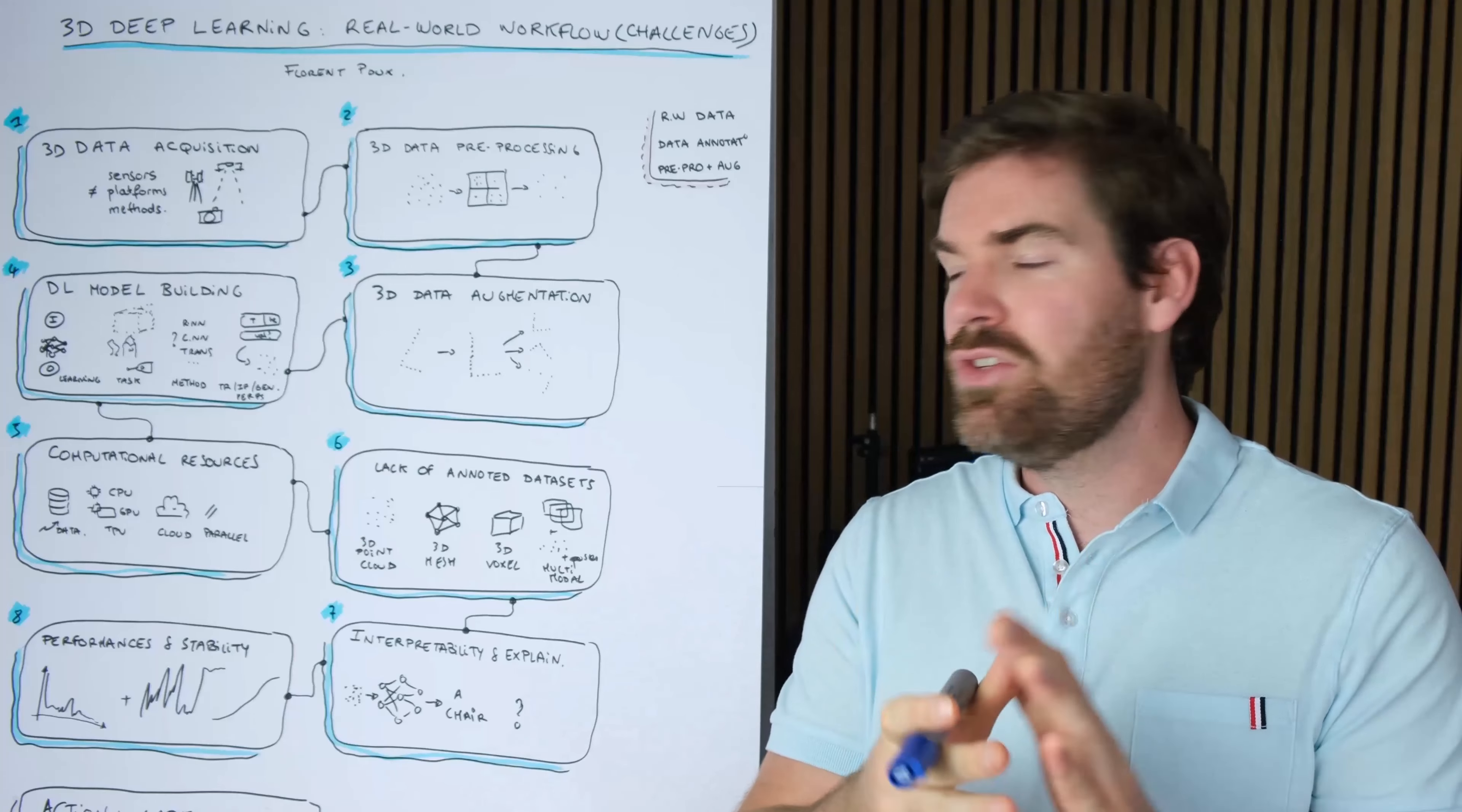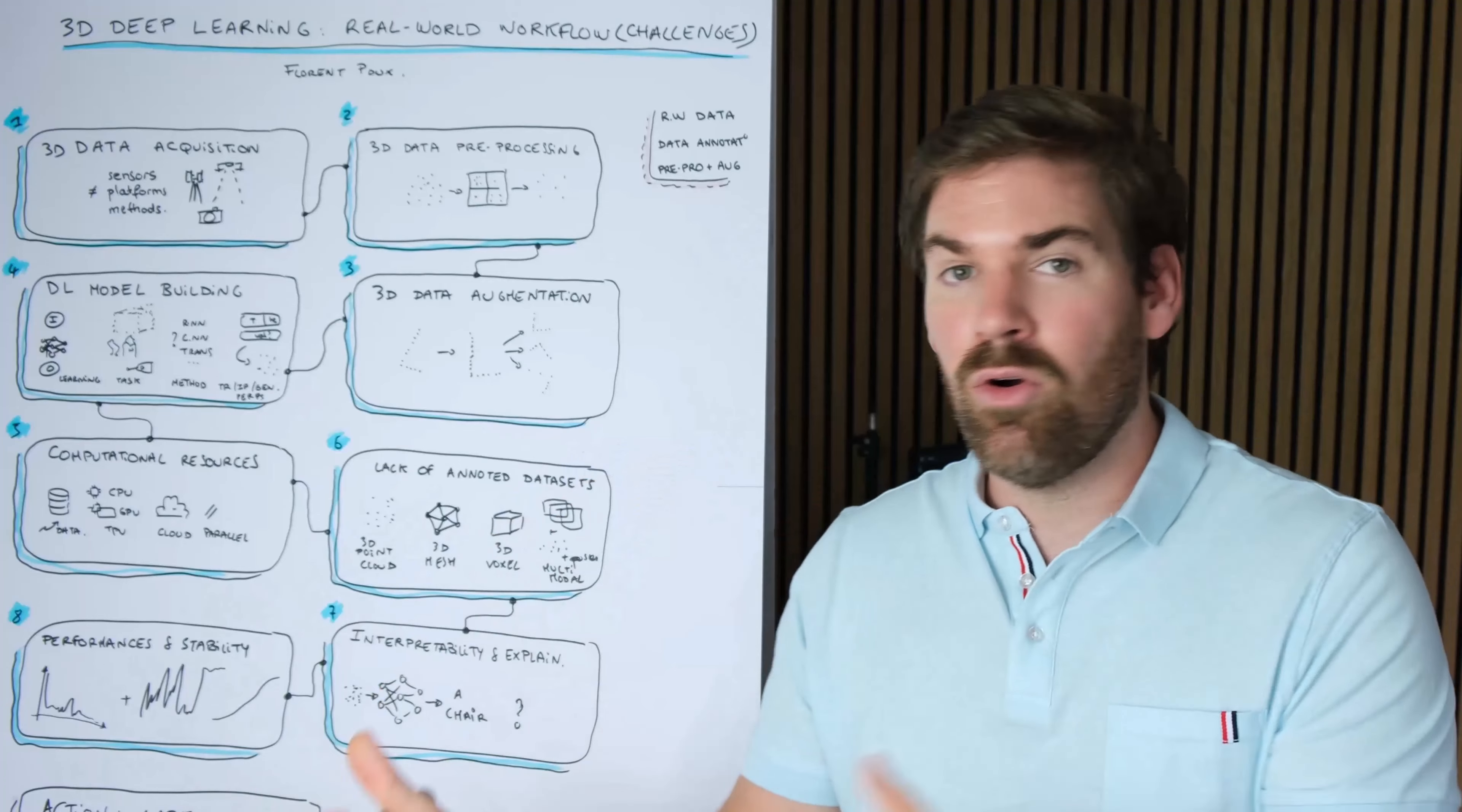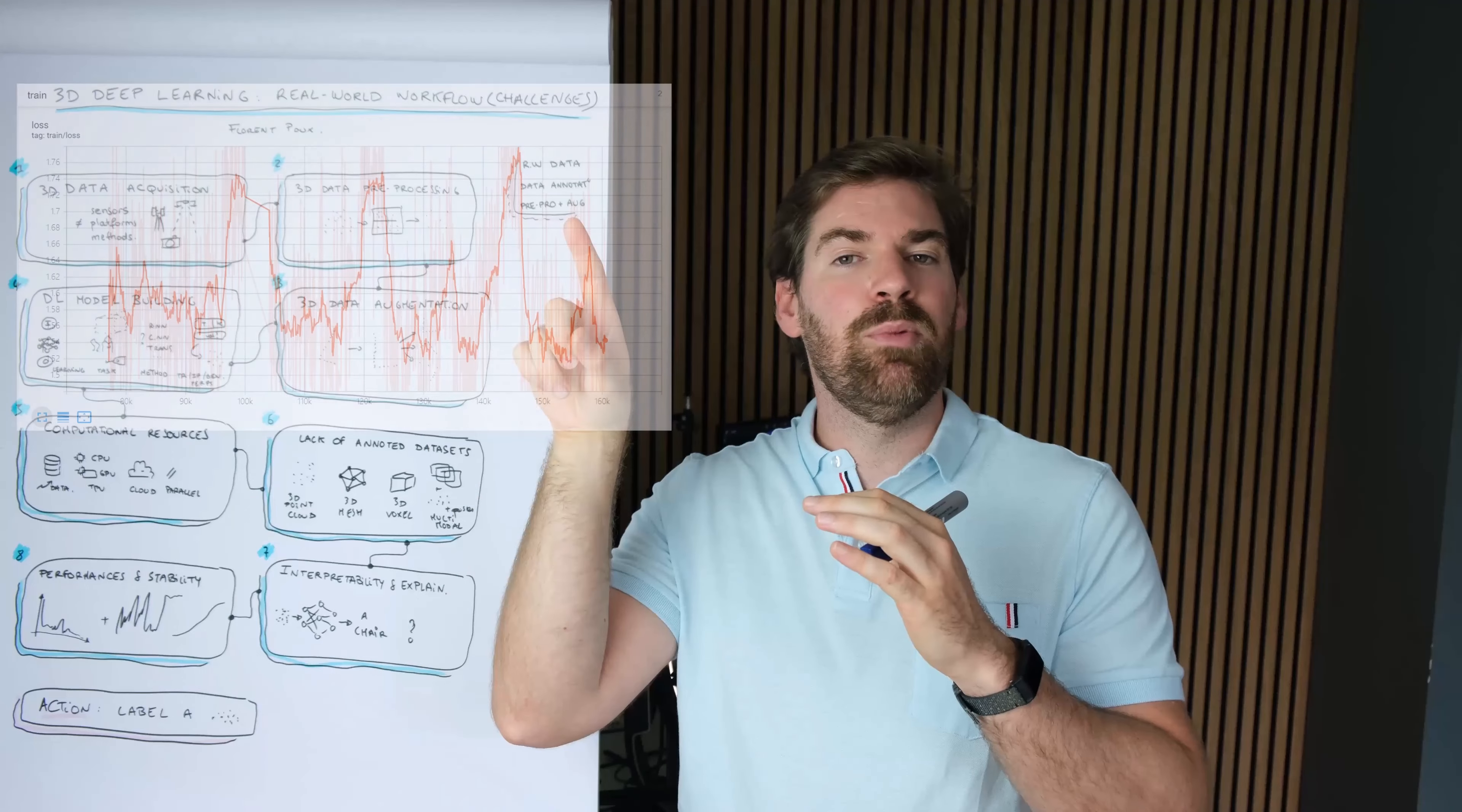The eighth challenge is performances and stability. You want to have the best performances for your model on a specific task or multiple tasks, and you also want stability, which means that during your training or inference or both, you want your model to perform in a smart and robust way. For the training, it means that you do not want to have per epoch, so it trains in loops, something very good performances, very poor performances, very good performances, very poor performances.